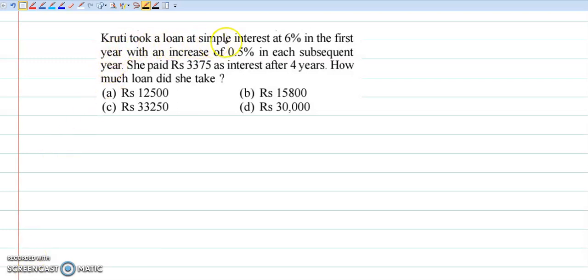Krithi took a loan at simple interest at 6% in the first year with an increase of 0.5% in each subsequent year. She paid Rs. 3375 as interest after 4 years. How much loan did she take? Here we are asked the principal amount.